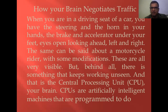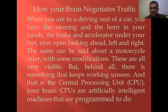When you are in a driving seat of a car, you have the steering and the horn in your hands, the brake and the accelerator under your feet, eyes open, looking ahead, left and right. The same can be said about a motorcycle rider with some modifications. These are all very visible. But behind all, there is something that keeps working unseen. There is one thing that always keeps working, and that is the central processing unit — in computer language, the CPU. But actually, this is your brain.